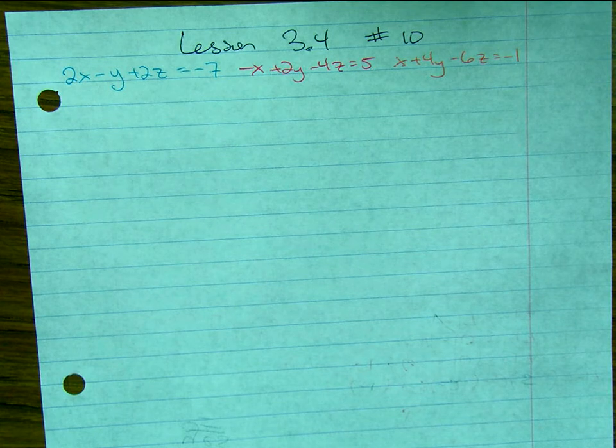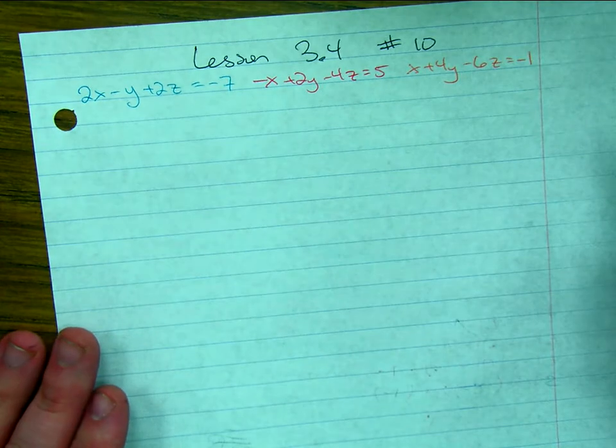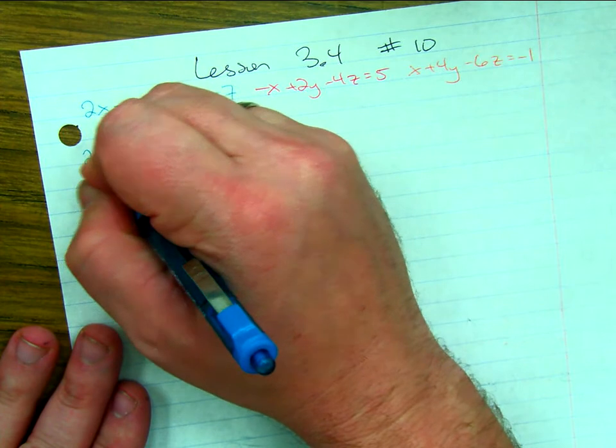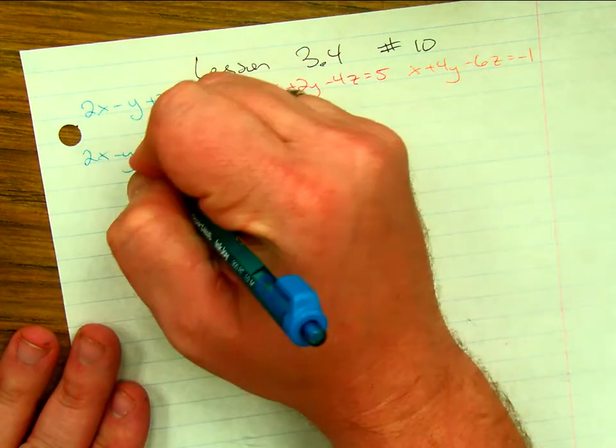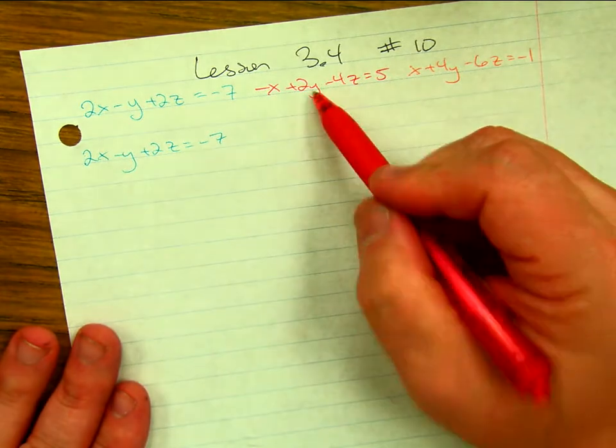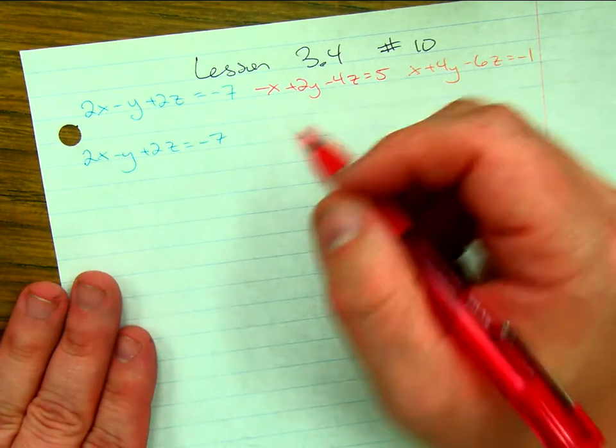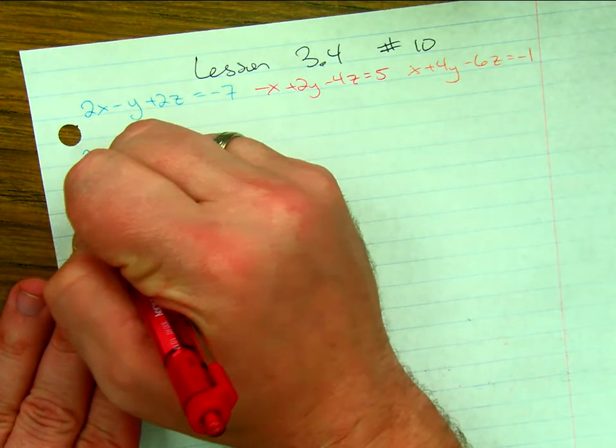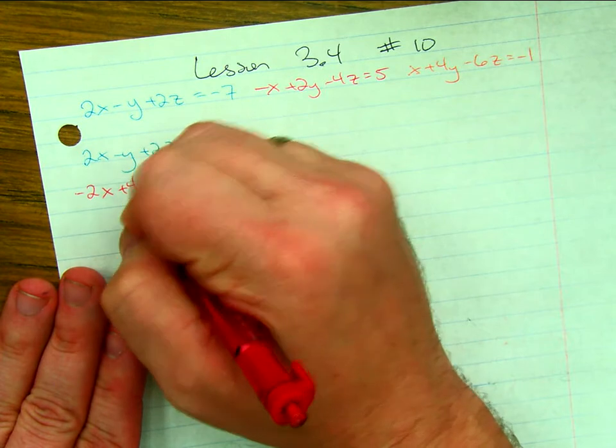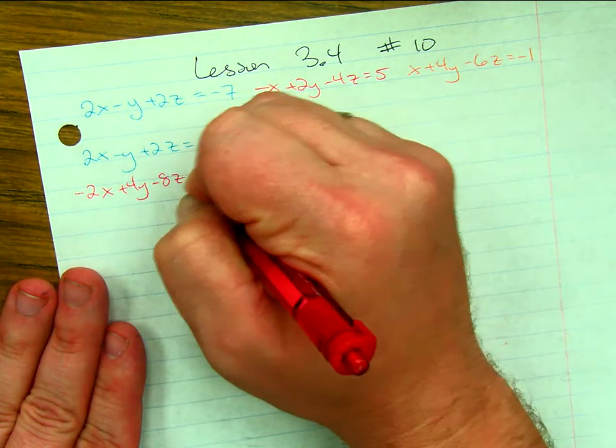So, the first thing I'm going to do is match up the red and the blue equation. And I'm going to leave the blue equation as is, namely 2x minus y plus 2z equals negative 7. But with the red equation, I'm going to multiply everything by 2.